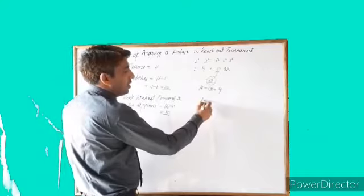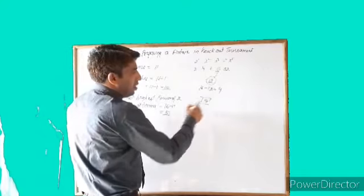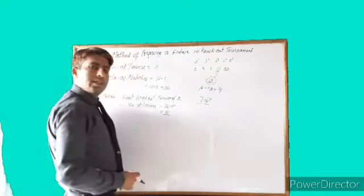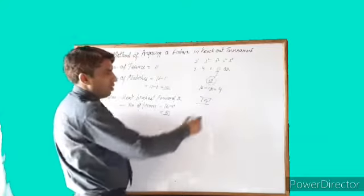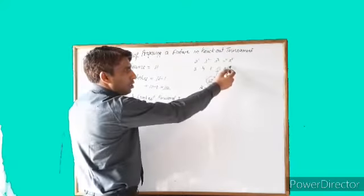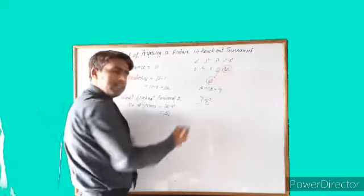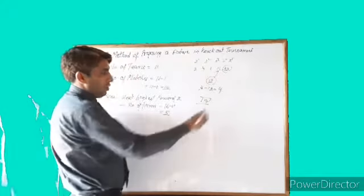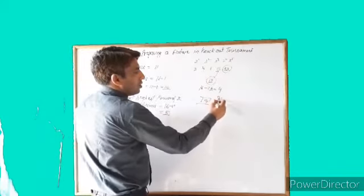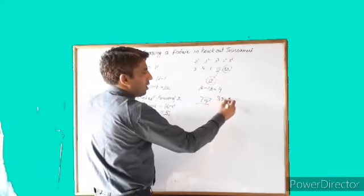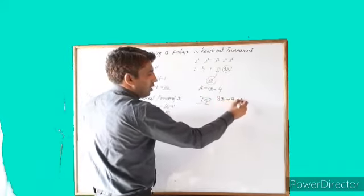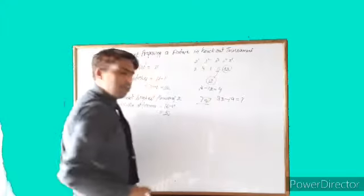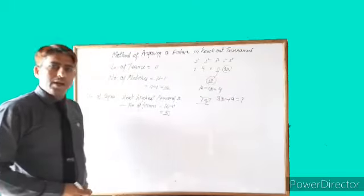Suppose we have 19 teams. The next highest power of 2 is 32. So 32 minus 19 gives the number of byes, which will be 13.